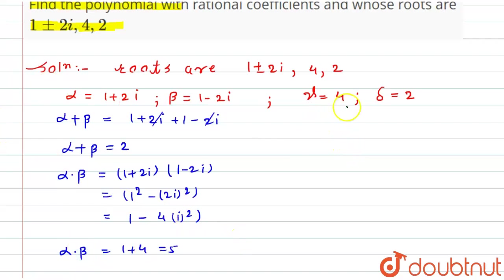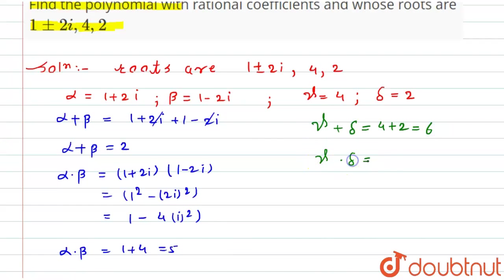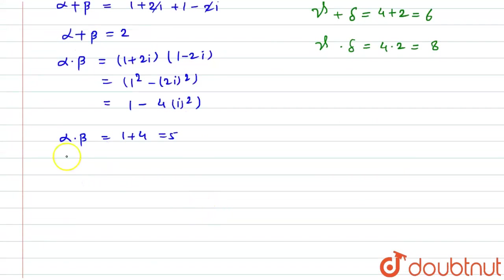Similarly, gamma plus delta equals 4 plus 2, which is 6, and gamma times delta equals 4 times 2, which equals 8.